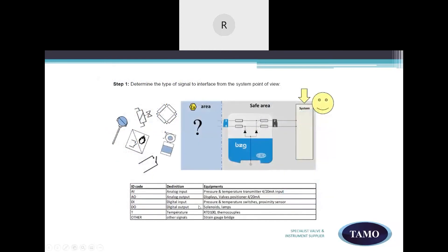Let's look at a step by step guide to selecting the barrier. Step one is to determine the type of signal to interface from the system. Depending on your type of signal and equipment type, in this case, we'll look at the pressure and temperature transmitter, 4 to 20 milliamp input. And we can see it's an analog input. We would now look under the analog input section within the selection guide.